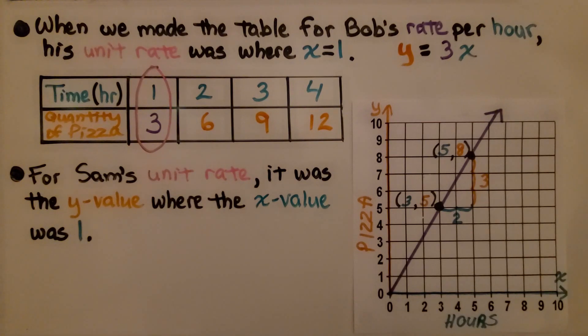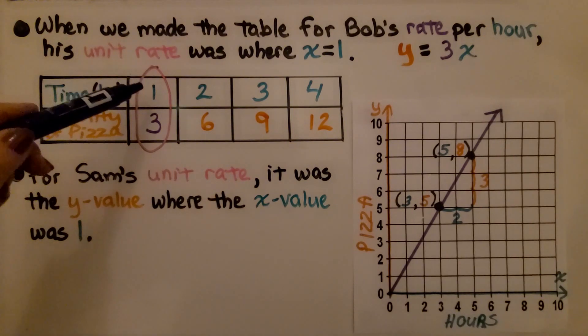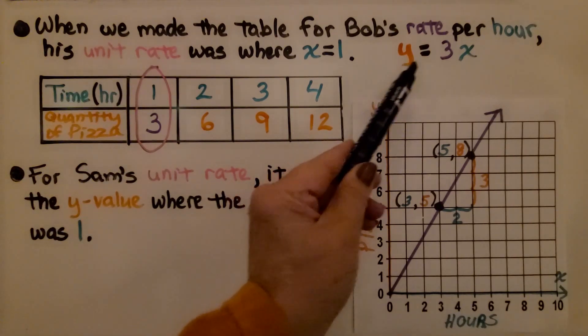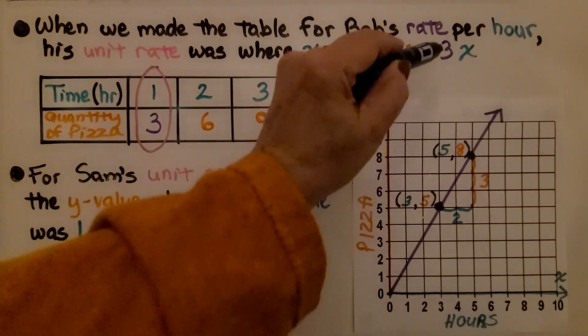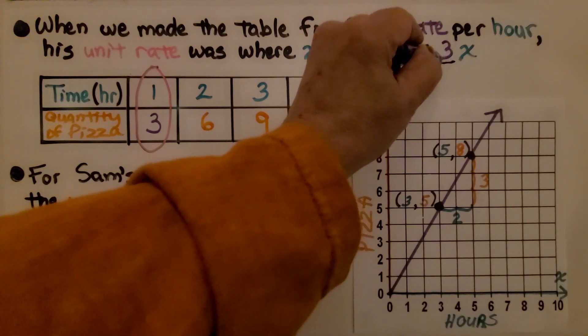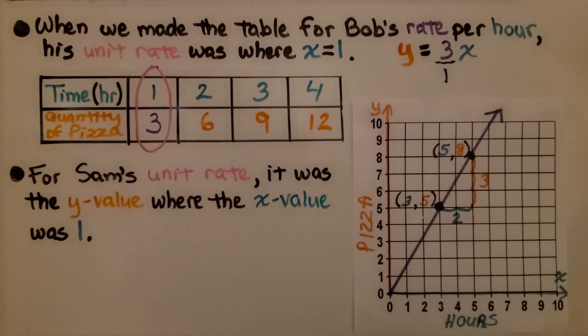When we made the table for Bob's rate per hour, his unit rate was where x equals 1. We had y equals 3x. This is our slope. We can write it over a 1. That was the unit rate. That was the slope.